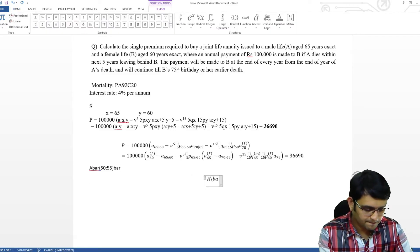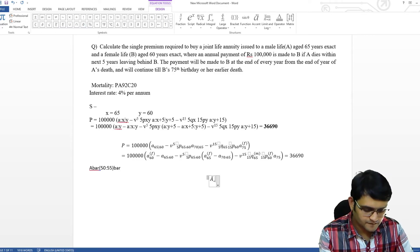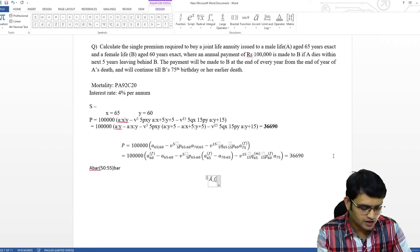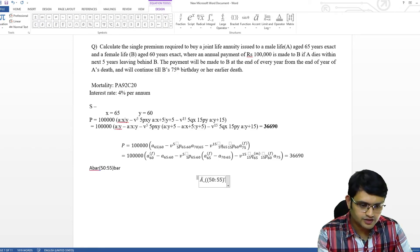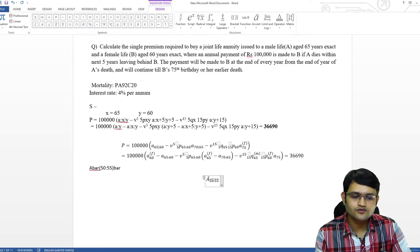I can say A bar and then underscore 50, 55 backslash bar space space and then bracket close another space. This is a way of writing.